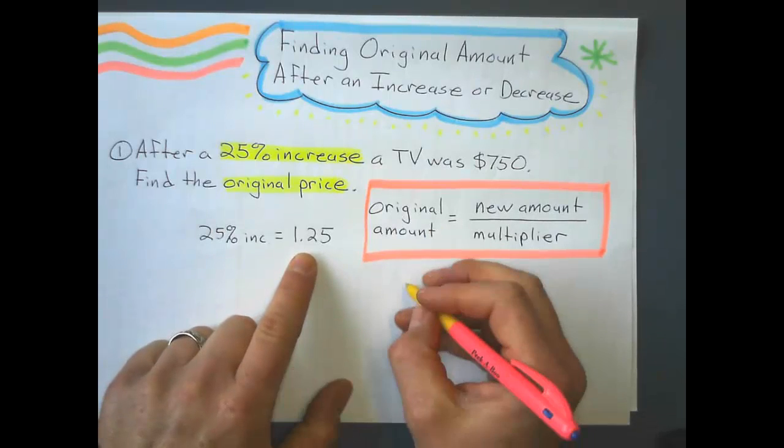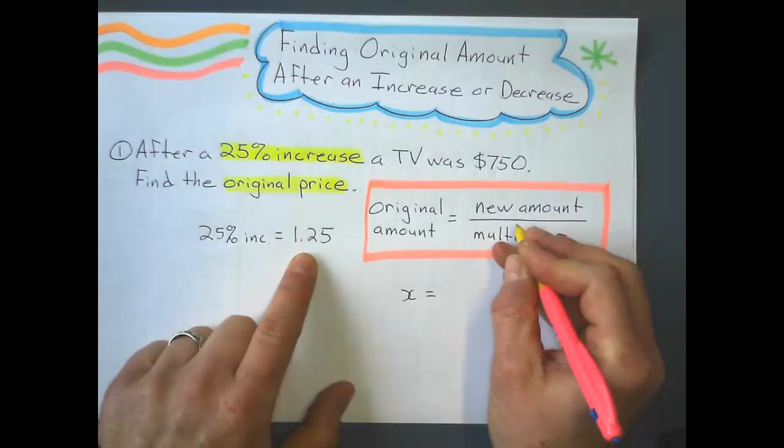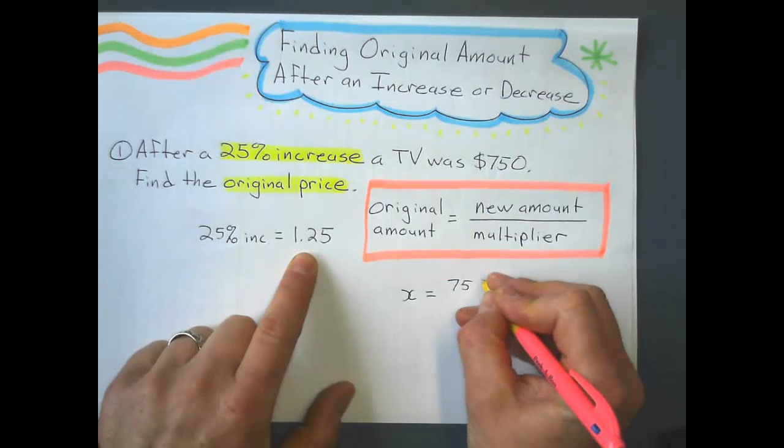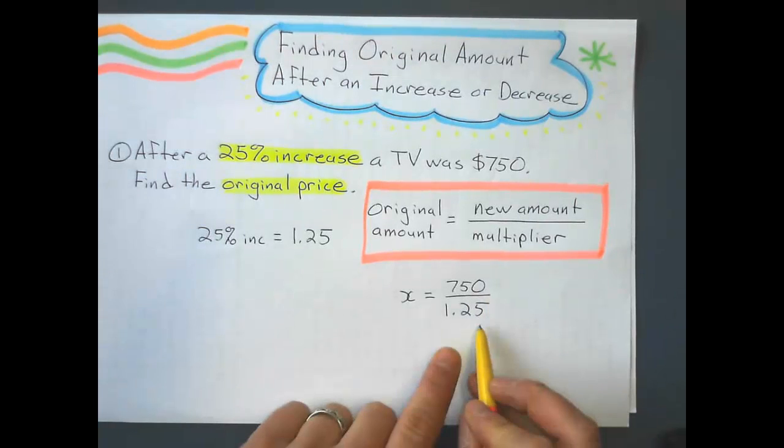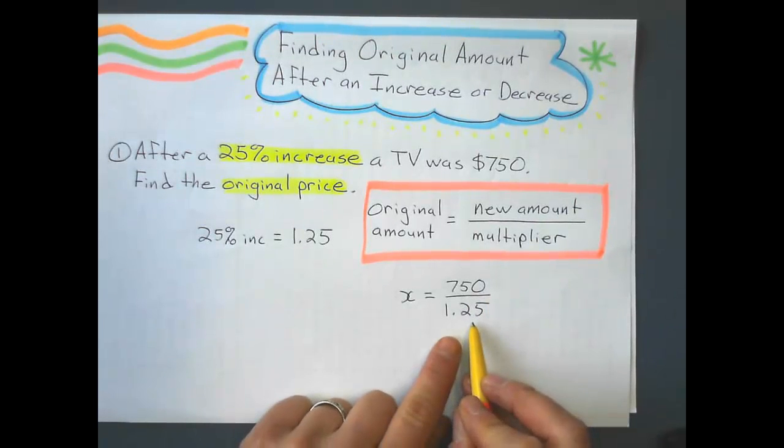So my original amount, let's call that x. My new amount in this case is $750. And my multiplier is 1.25. That is after a 25% increase.